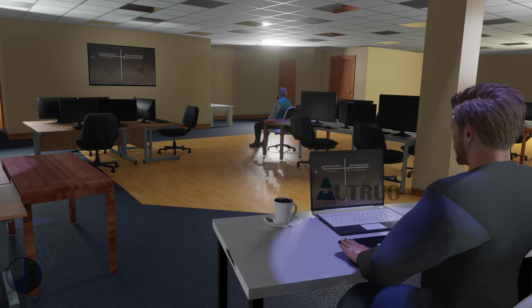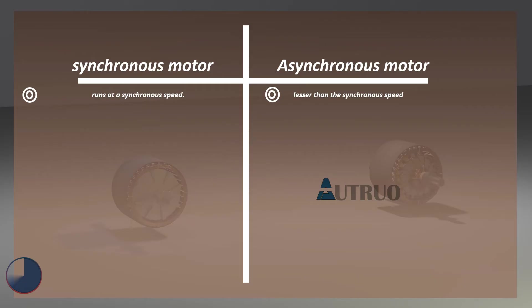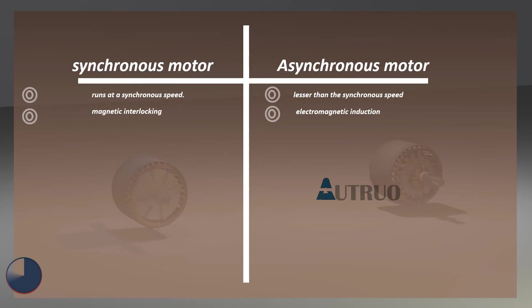Now let's look at the major difference between a synchronous motor and an asynchronous motor. A synchronous motor is an AC motor that runs at synchronous speed, meaning the speed of the rotor is the same as the speed of the stator's rotating field — which is why it is known as a synchronous motor. On the other hand, an asynchronous motor runs at a speed that is lesser than the synchronous speed, so the rotor speed and stator speed are different. The operating principle of the synchronous motor is based on magnetic interlocking between the magnetic fields of the stator and rotor. The asynchronous motor works on the principle of electromagnetic induction between the stator magnetic field and rotor circuit.